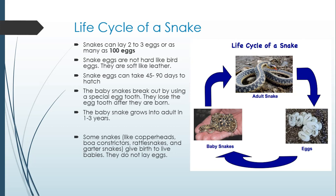Snake eggs are not hard like a bird egg or an egg you buy at the store — they are soft, like leather. They take 45 to 90 days to hatch, which can be up to three months. The baby snake breaks out by using a special egg tooth, which they lose after they're born because they don't need it anymore. It takes about one to three years for a baby snake to grow into an adult so it can lay its own eggs.